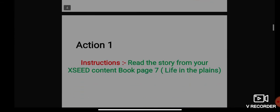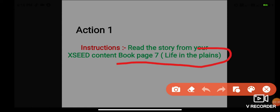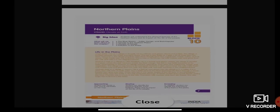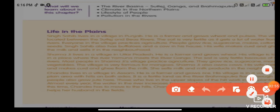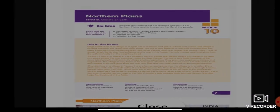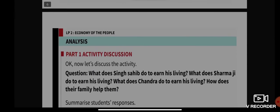Now let's get into Action One. I want all of you to read the story from your exit content book, page seven — that is 'Life in the Plains.' I want all of you to read this on your own. I'm not going to read it for you because it will consume more time, so please go through 'Life in the Plains.' As you go through it, you will learn many things about the people living in the river plains.